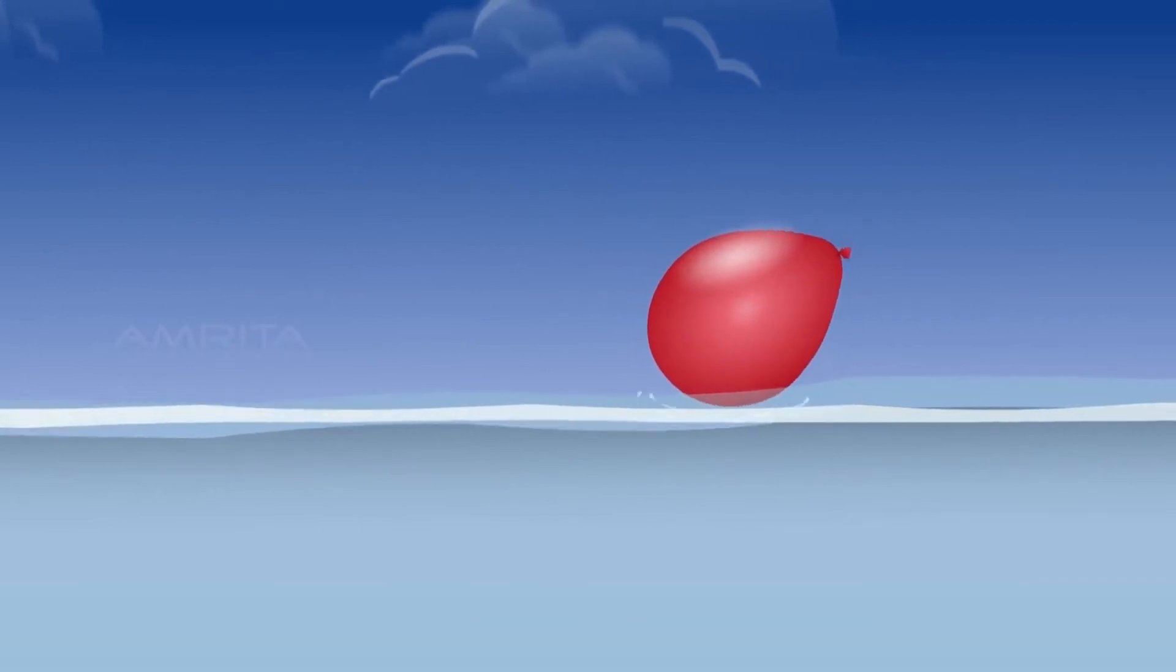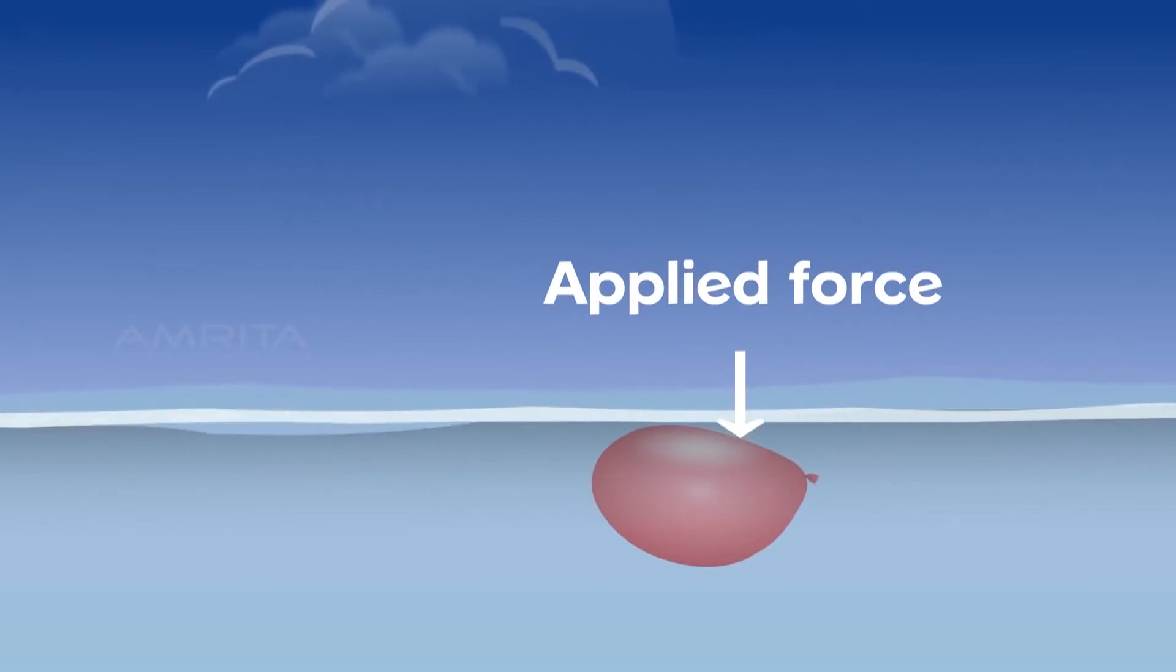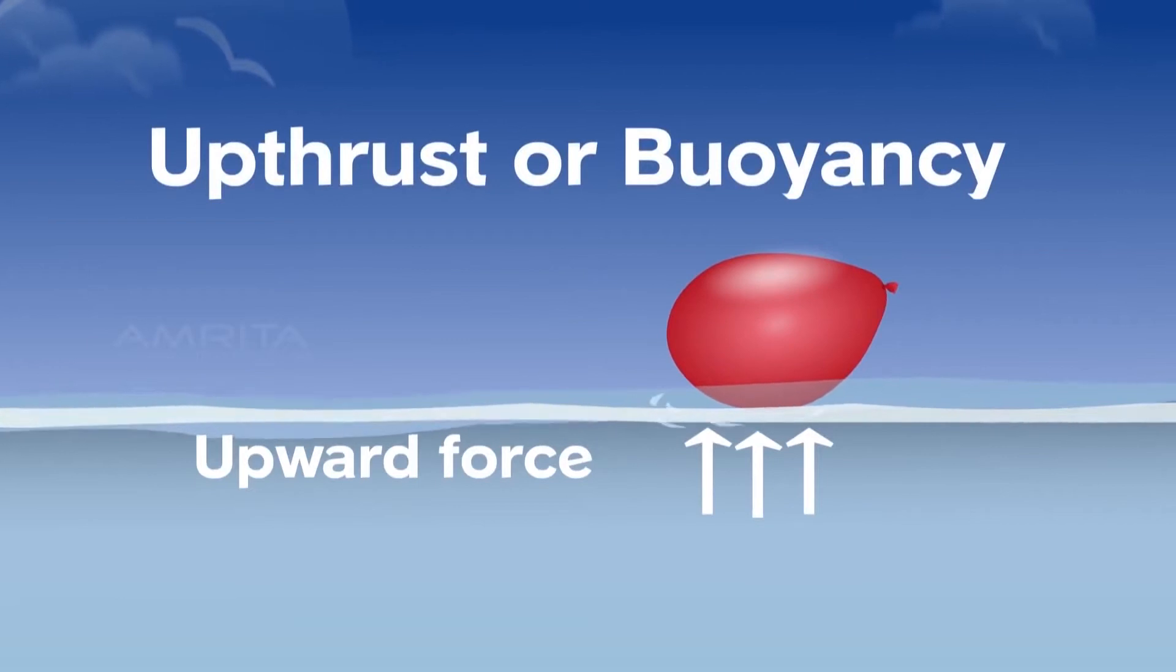What happens here is that the applied force acts in the downward direction, pushing the balloon down, but the water exerts an upward force on the balloon pushing it up. This upward force exerted by water on the balloon is known as upthrust or buoyancy and the upward force is called the buoyant force.